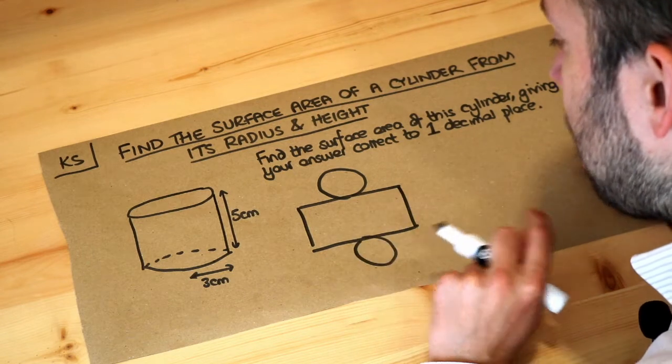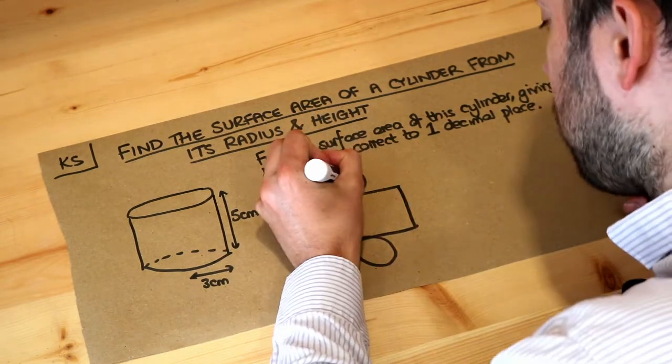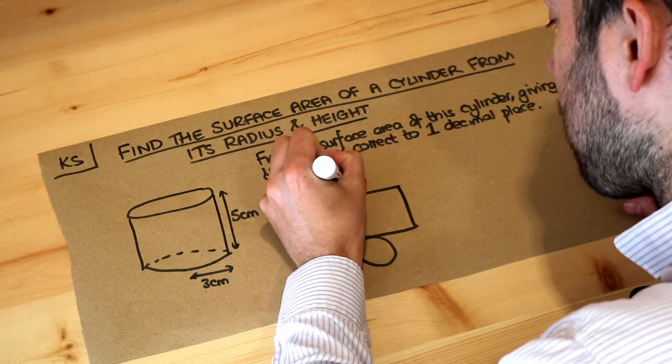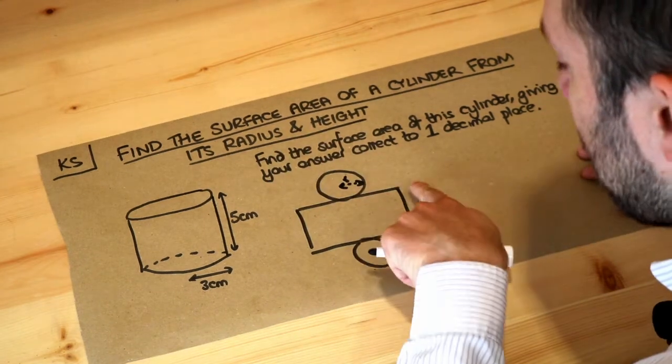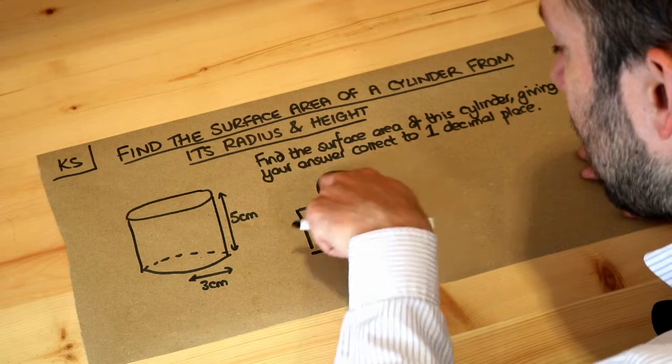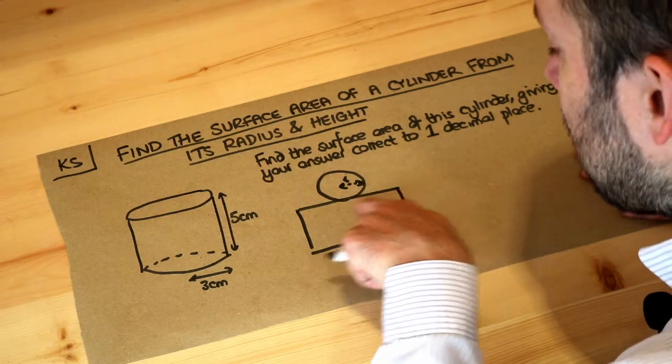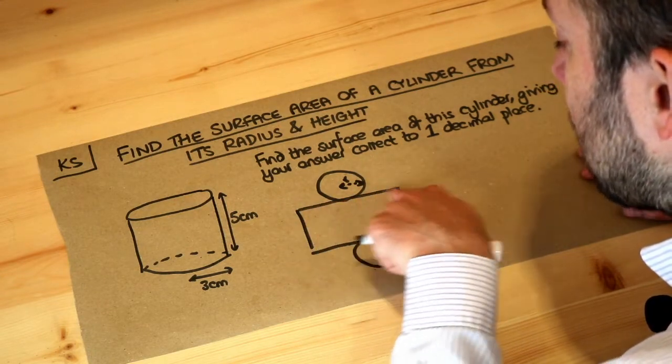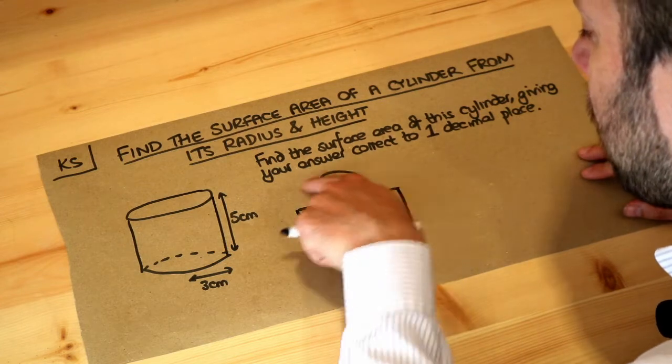So let's think about the area of this. The radius of the circle we'll just say is r, and can you see that because this length here has to be the same length as this here, this length of the rectangle must be the same as the circumference of a circle.